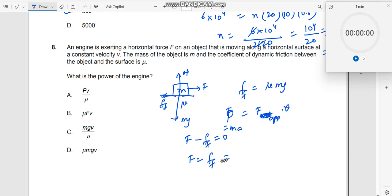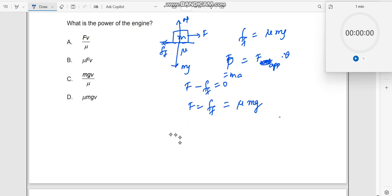So which should now be equal to μ times M times g. Therefore, your power—scroll this a little bit. So power P is equal to F times V, which would be equal to μMgV, which is the right answer.